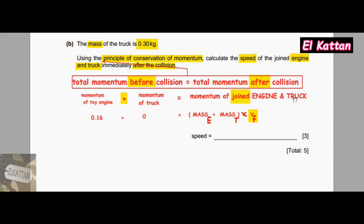This equals the combined system. The keyword 'joined' means I am dealing with engine and truck as a combined mass, as one object. So in brackets, mass of engine plus mass of truck, times the final velocity for the combined or joined engine and truck.